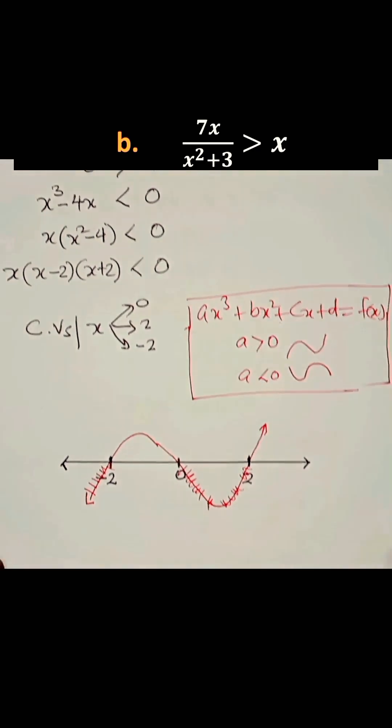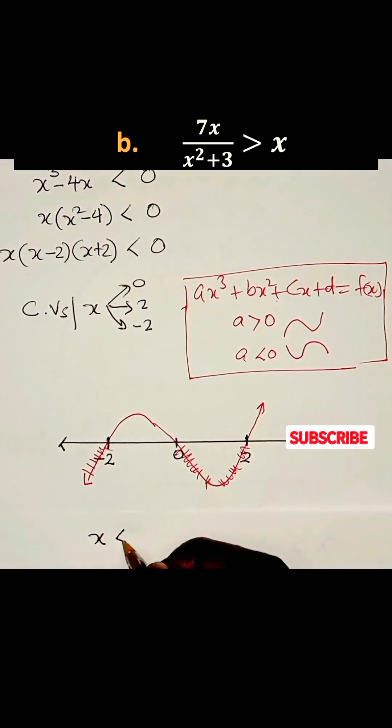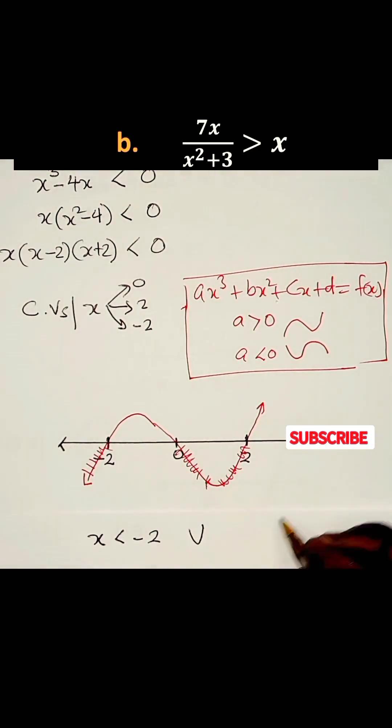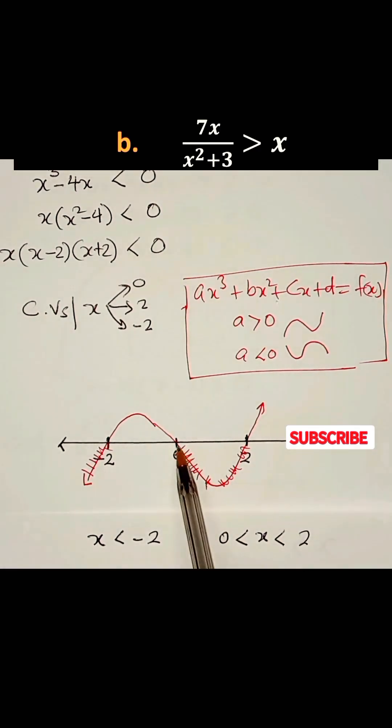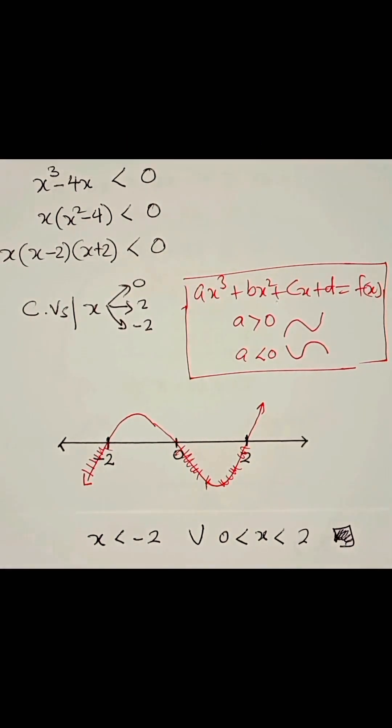Then we say x is less than -2, going that way in that region. And x is greater than 0 and x is less than 2, because x lies between 0 and 2. And we are done with this rational inequality.